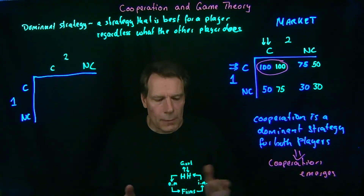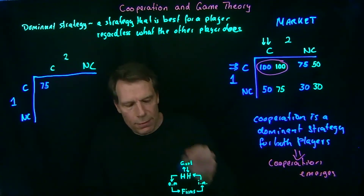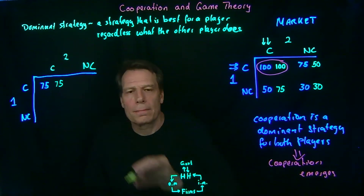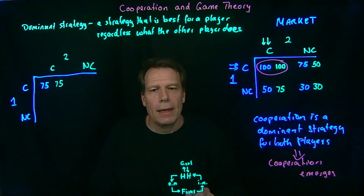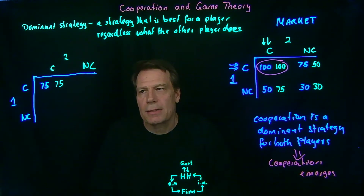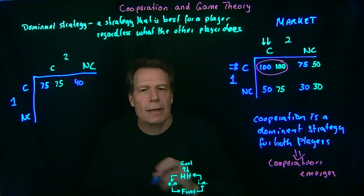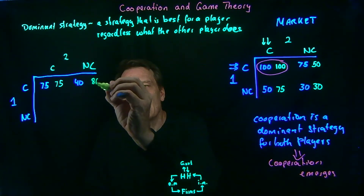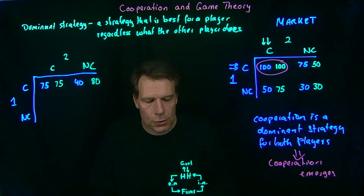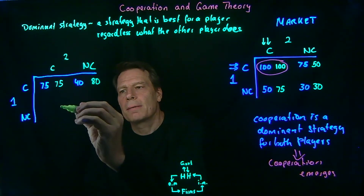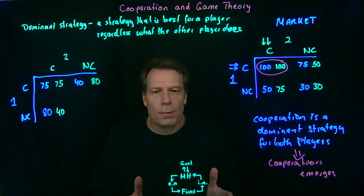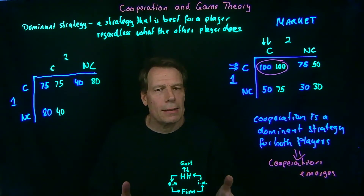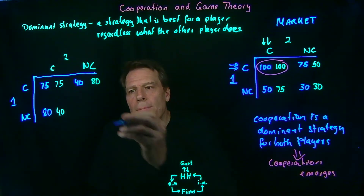If you're conserving and the other player also conserves, suppose your payoff will be 75 each. But if you conserve and the other player does not, you're bearing all the cost of conserving while the other player benefits from your conservation and just takes whatever she can. In that case, the person who conserves gets a payoff of 40 and the person who doesn't conserve gets 80. The reverse is true if Player 2 conserves and Player 1 does not — Player 2 gets 40 and Player 1 gets 80. And if neither conserves, they just grab what they can but the fish deplete over time, so they both get a payoff of 50.